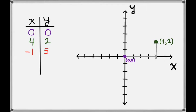Now let's look at the point (-1, 5). Our x-value is negative, so we'll go to the left 1. And our y-value is still positive, so we'll go up 5. This gives us the point (-1, 5).